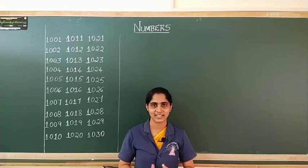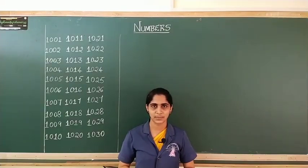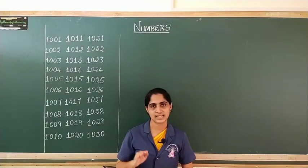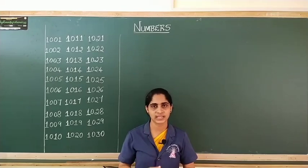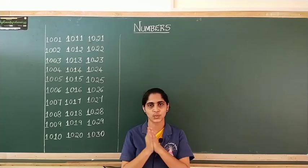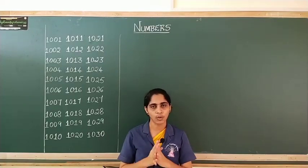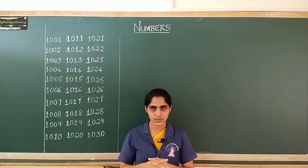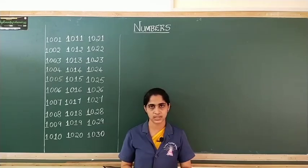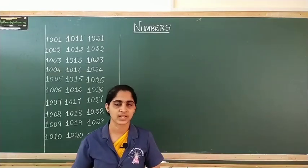Hello my dear students, welcome back. I am Akshata. Do you remember what we have done in our previous video? Yes, we had discussed about formation of four digit numbers. Now you know which is the smallest as well as largest four digit number. I had asked you to write the numbers from 1000 to 1200. I hope that you all have written those numbers. In today's class, let us practice reading those numbers. So I am going to read the numbers — you have to repeat after me. Let's start.